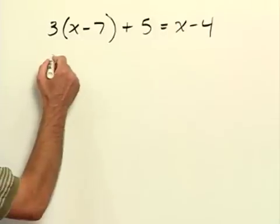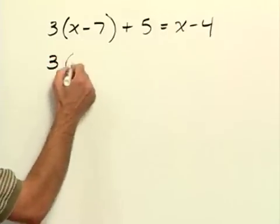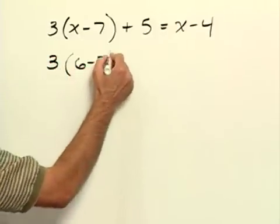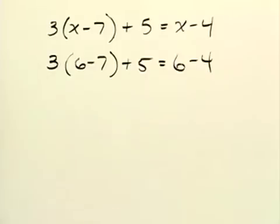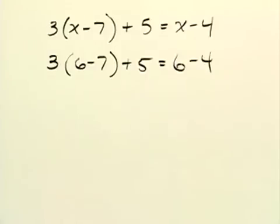So when we do that we'll have 3 times 6 minus 7 plus 5 equals 6 minus 4. From here we're just going to follow the order of operations and see if we come up with a true statement.